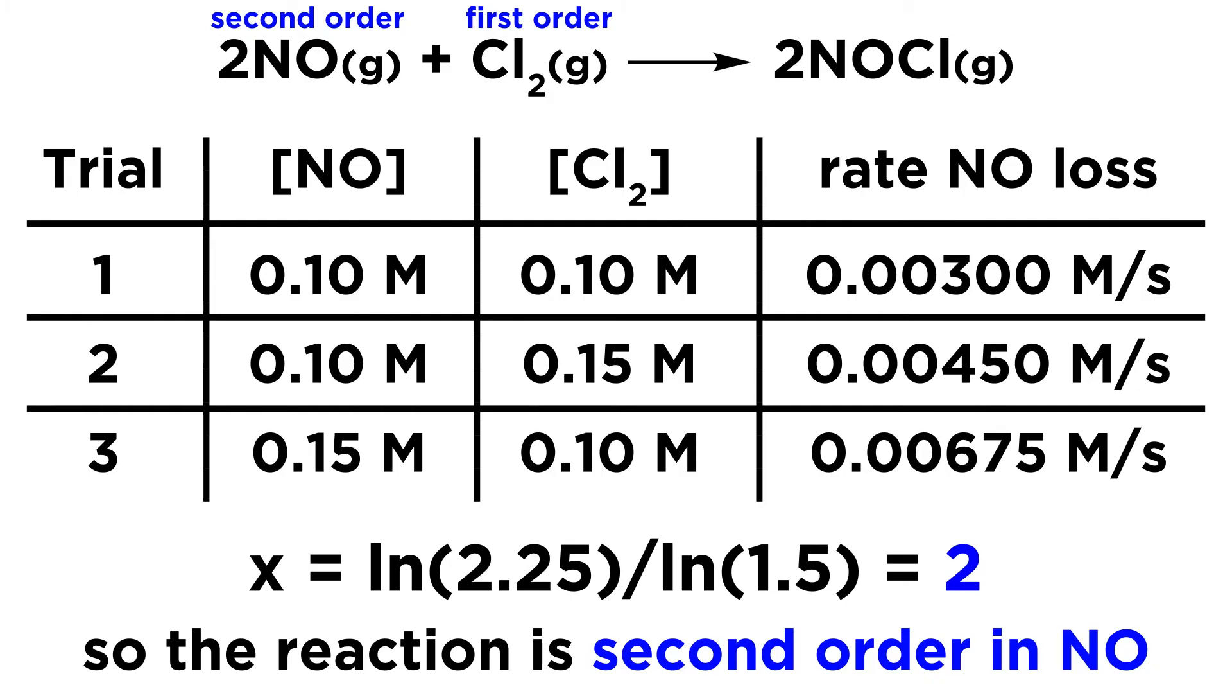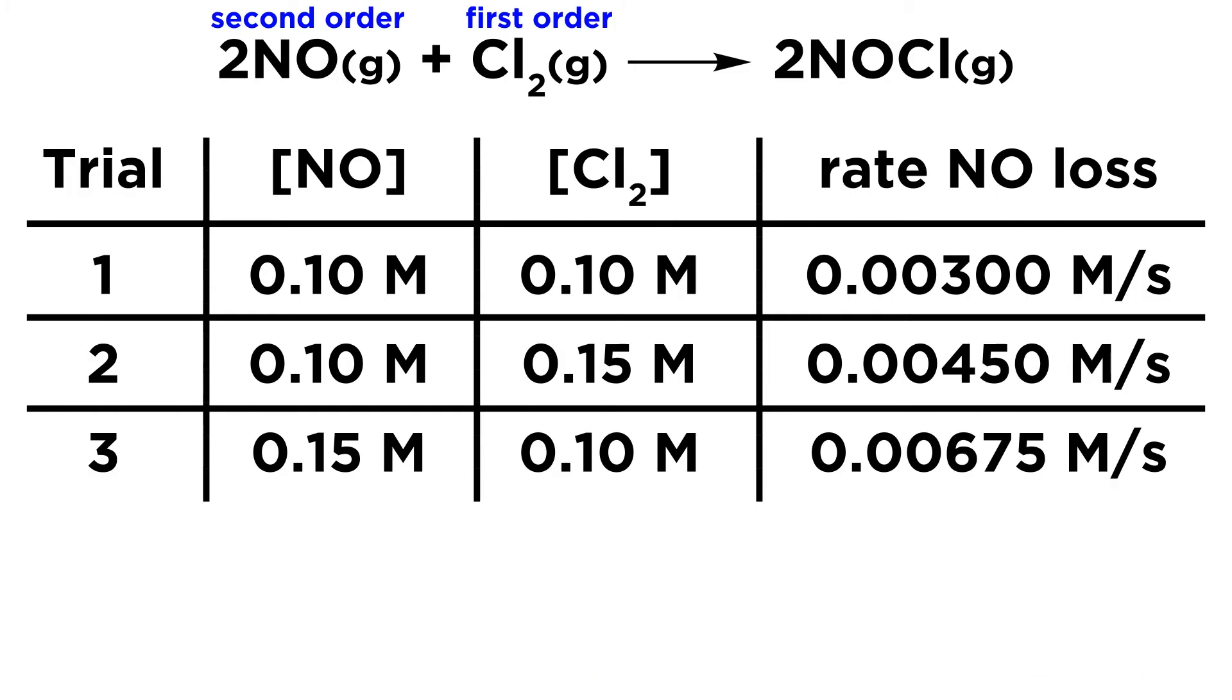So because x equals 2, the reaction is second order in NO. So this technique is useful because we can use any kind of data where the concentrations and the rates are increasing by any factor. It doesn't even have to be an integer factor. It can be any random data. It doesn't have to be the perfect situation where things are doubling. We can take any data, and we will be able to calculate the order with respect to any of these reactants.